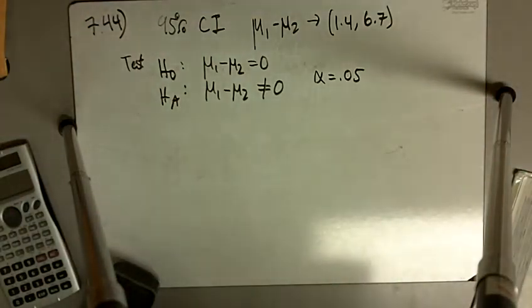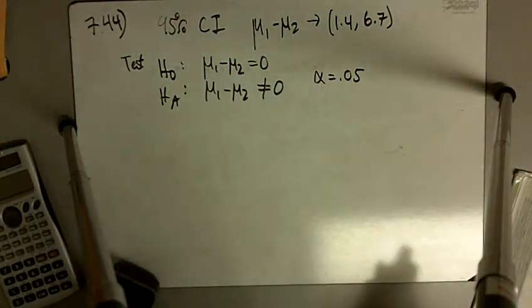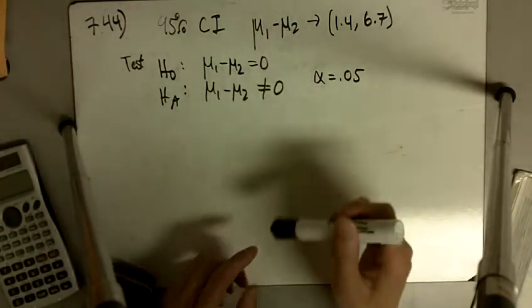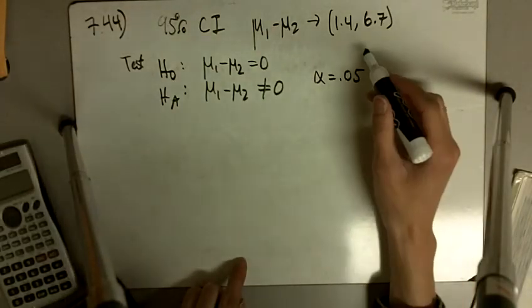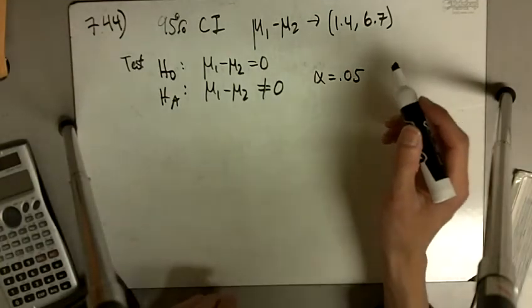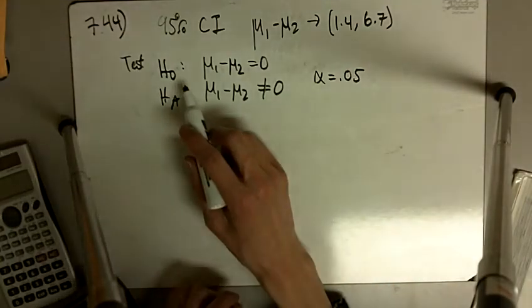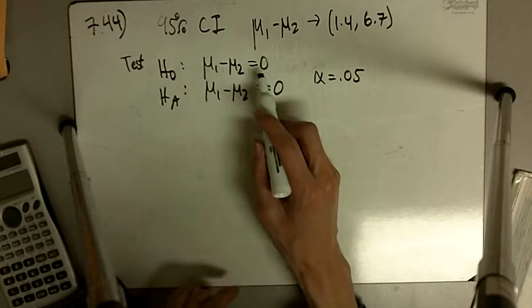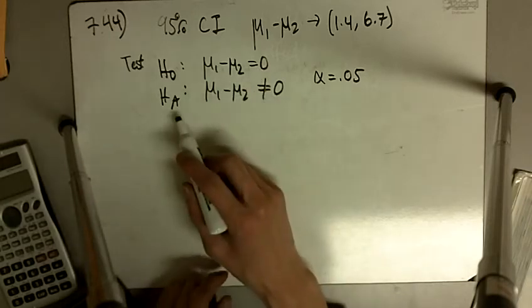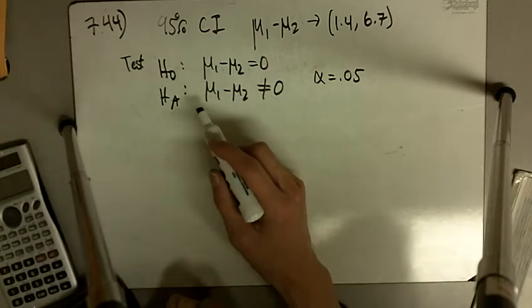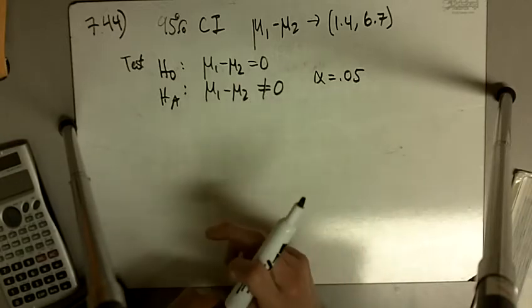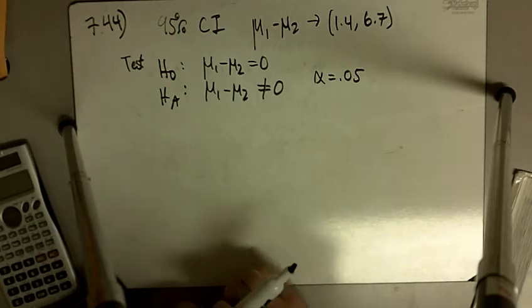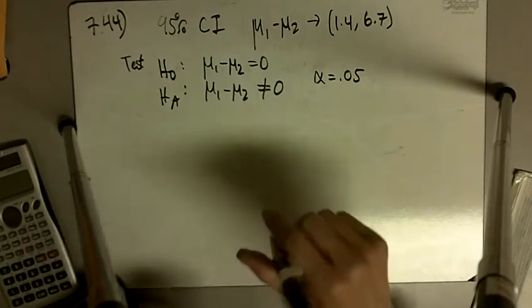744 says, suppose that a 95% confidence interval for μ₁ minus μ₂ is calculated to be 1.4 to 6.7. If we test the null hypothesis, μ₁ minus μ₂ equals 0 versus the alternative—I think there's a typo in the book—that μ₁ minus μ₂ does not equal 0 using α equal to 0.05, will we reject H₀? Why or why not?